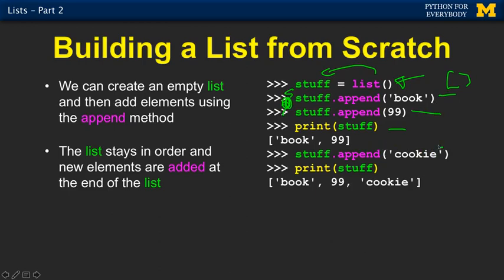And so you can sort of do this over and over and over and append things if you like. And you can keep on going. We can append the string cookie. So at the end of cookie, you've got three things in there, book 99 and cookie. So append is a method.